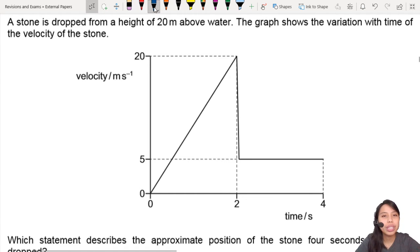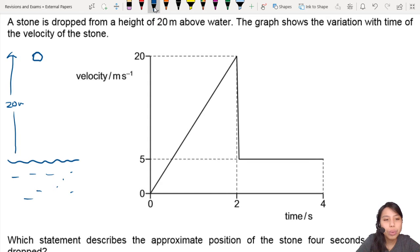Let's draw out the scenario to think about this. So you have a stone above water. I can draw some water here. This is water. And you are dropped from here. So this is where you are at 20 meters.